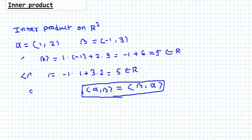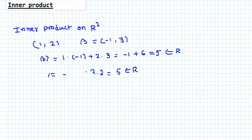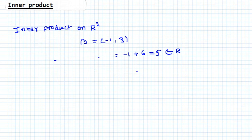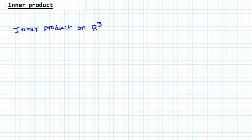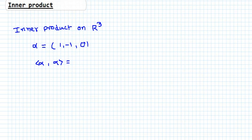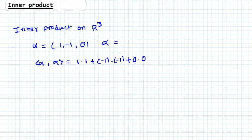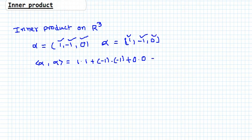Let's talk about the inner product of two vectors in R3. Take vector alpha = (1, -1, 0) in R3. Let's compute (alpha, alpha): 1×1 + (-1)×(-1) + 0×0 — we multiply the first component with the first, second with second, and third with third — giving 1 + 1 + 0 = 2.